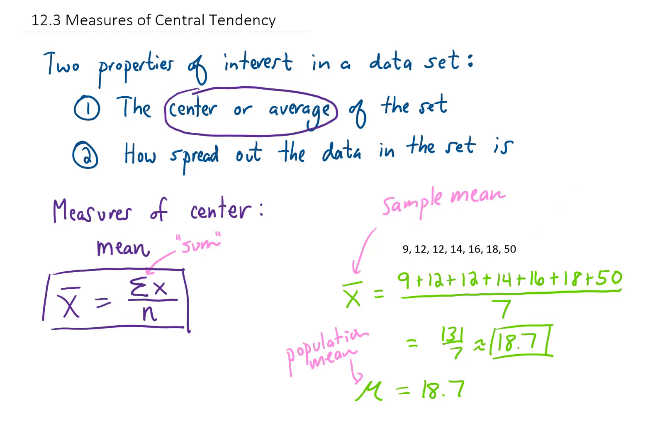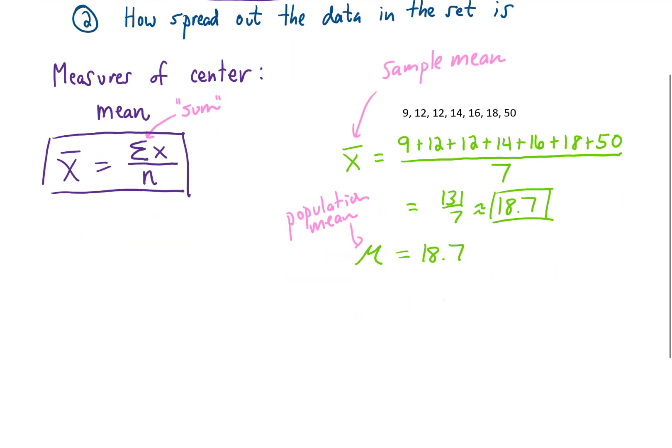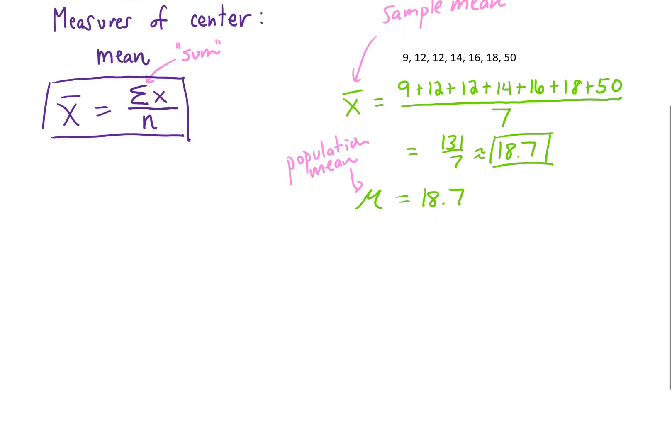So there are going to be some cases when you have a set of data where you're more interested in a different measure of center. You might instead be interested in what we call the median.